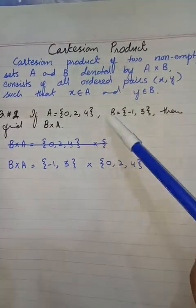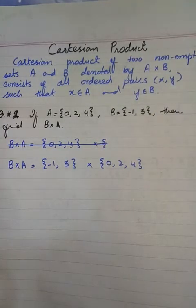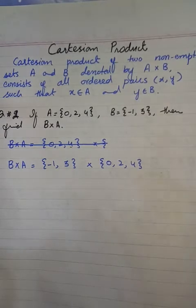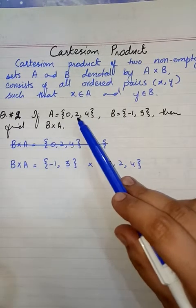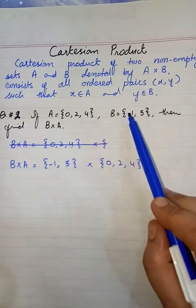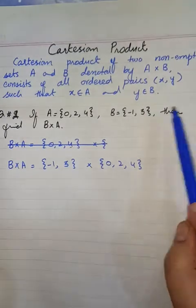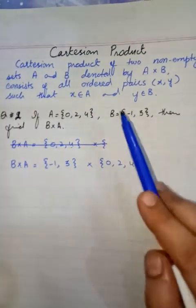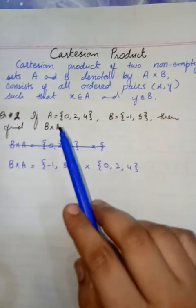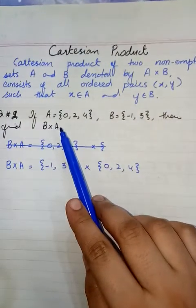Let's do a question. That's in question number 2. If set A is having three elements 0, 2 and 4, and set B is having element minus 1 and 3, then you have to find B multiply A and other parts are also in the question. You have to do by yourself. We are going to solve B multiply A.